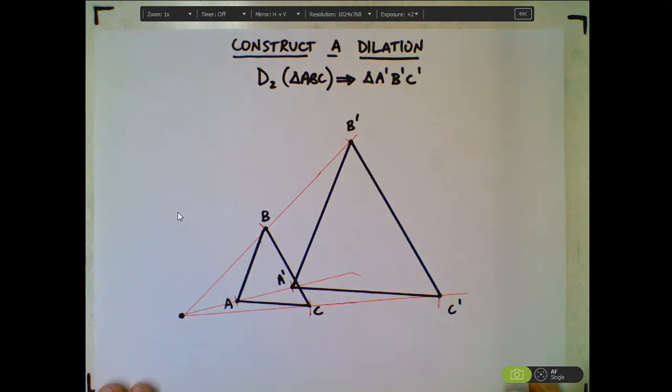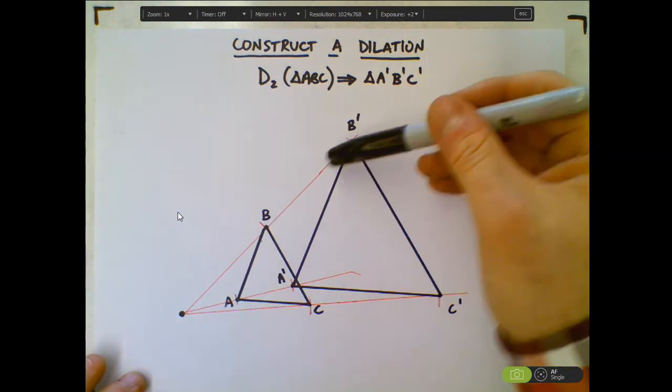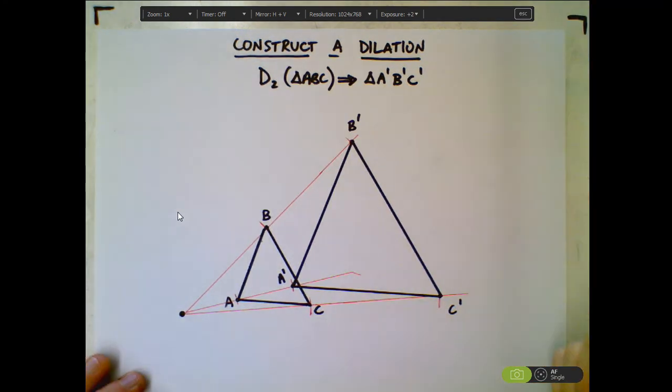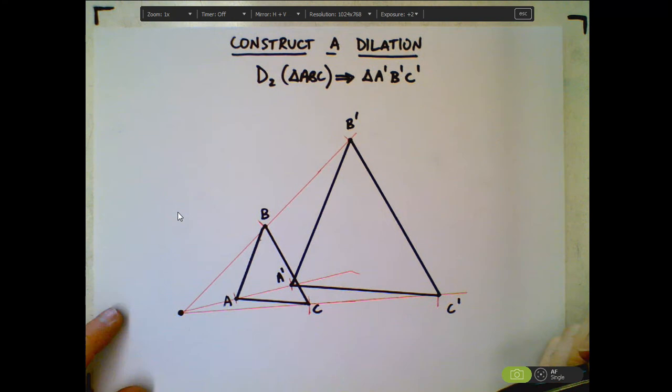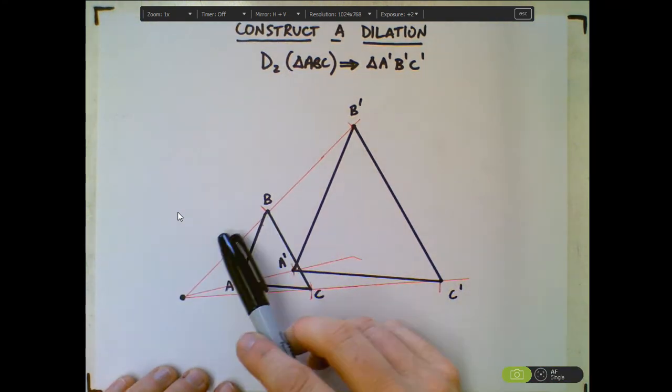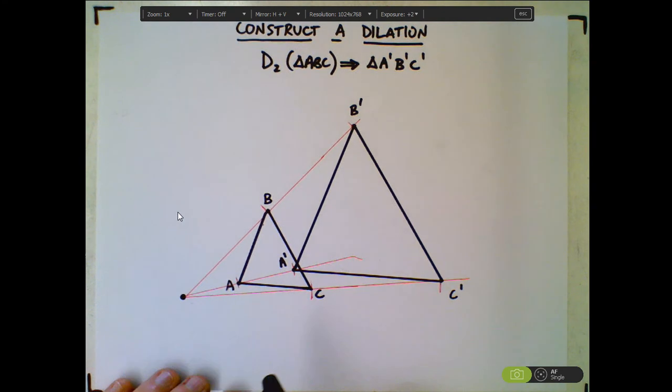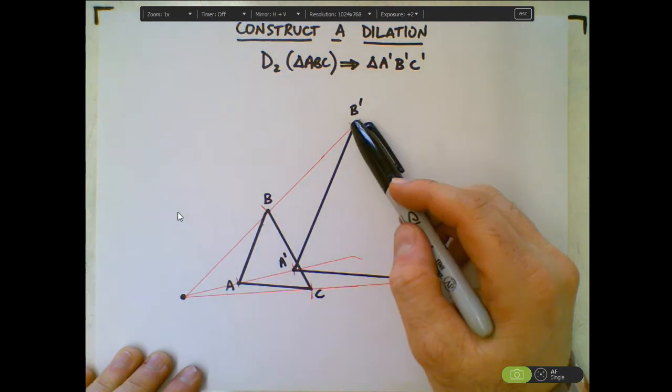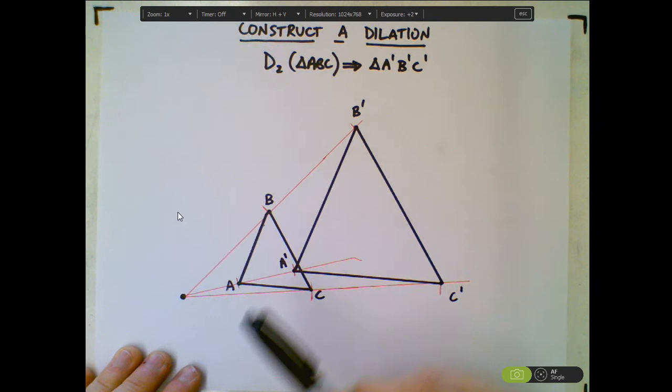If you had a scale factor of three, then you would need to measure the distance, mark it off once, mark it off again. If you had a scale factor of, say, one half, then you'd have to mark off the distance and then bisect it using the bisector construction. If you had one and a half, then you'd measure the distance, mark it off again, and then you would bisect this segment.